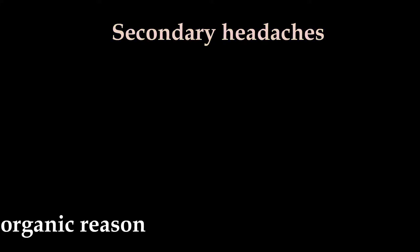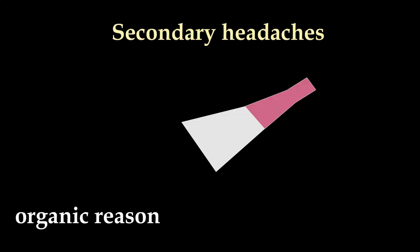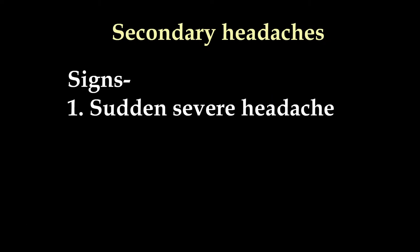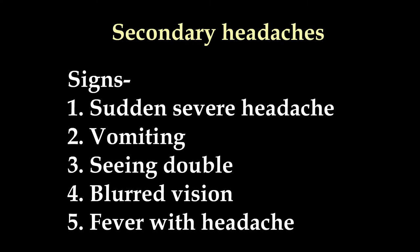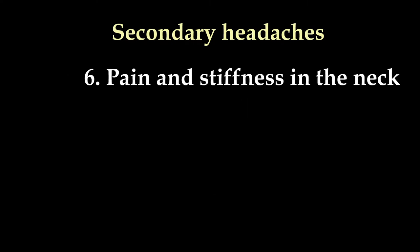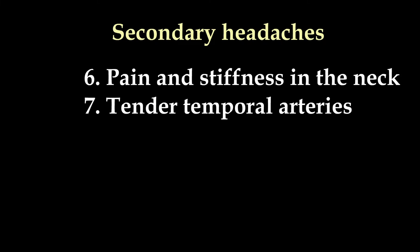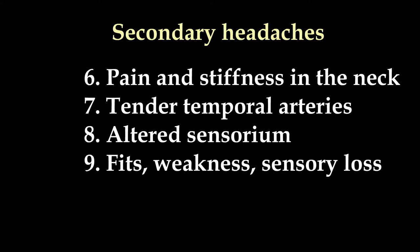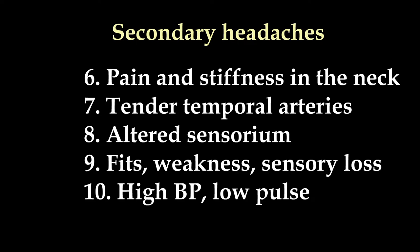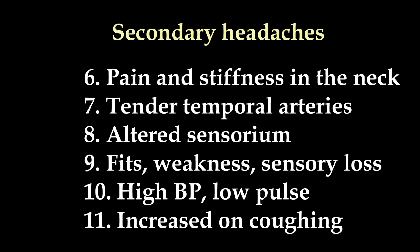A secondary headache occurs due to a specific organic reason. Though rare, one needs to look for it in any new or worsening headache. Signs that a headache could be secondary include: sudden severe headache, associated vomiting, seeing double, blurred vision, fever with headache, pain and stiffness in the neck, tenderness over the temporal arteries in a middle-aged person, altered sensorium, fits, weakness or sensory loss, unusually high BP with a low pulse rate, a headache increased on coughing, or a headache worse on bending forward.